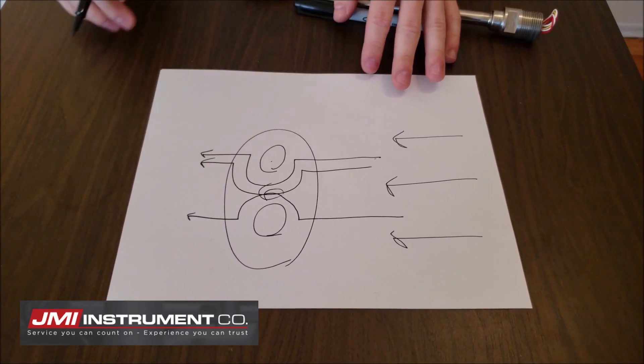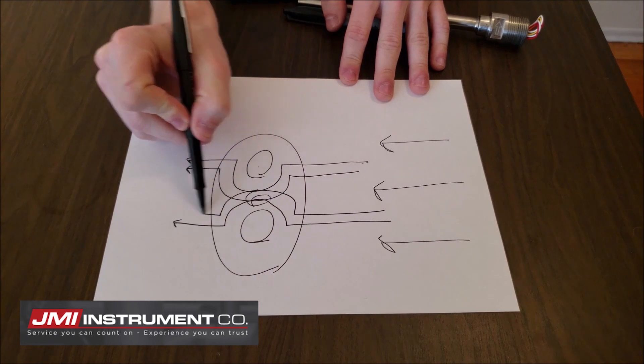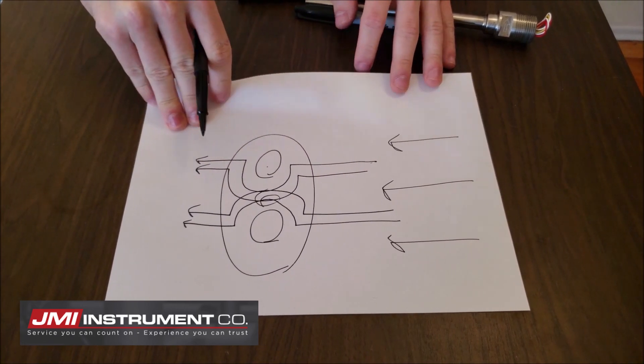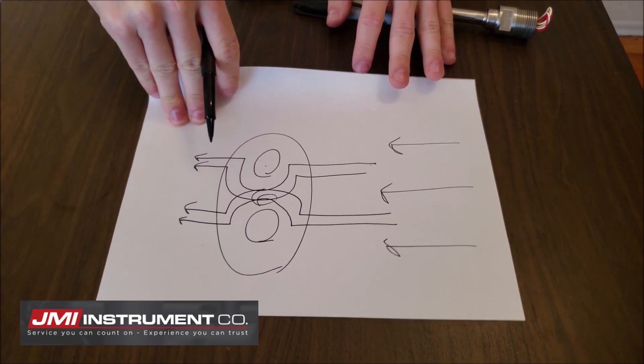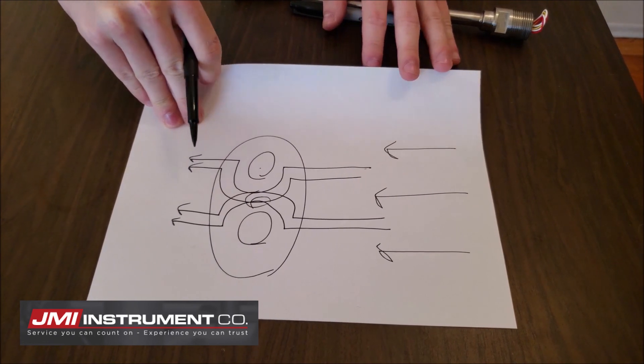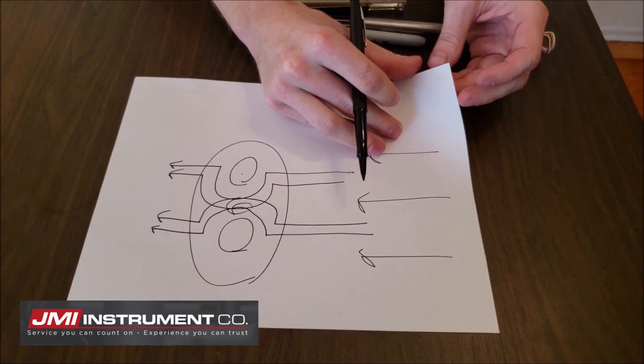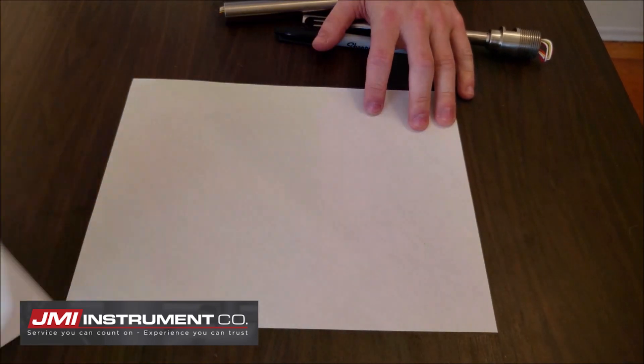Now, Fox Thermal did an analysis on how flow velocity exactly like this affects probe stability. And their findings led them to a probe offset of about 35 degrees. They found that to be optimal for both sensing elements for this reason.